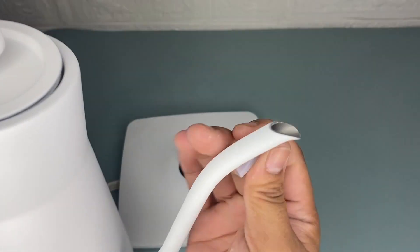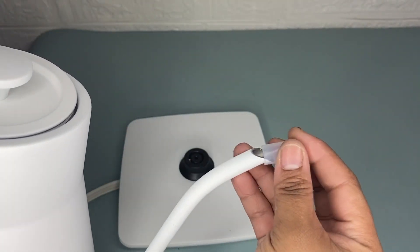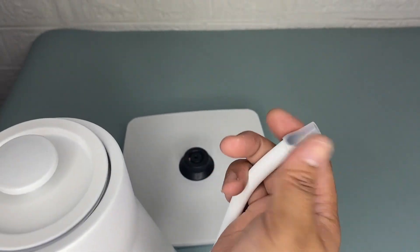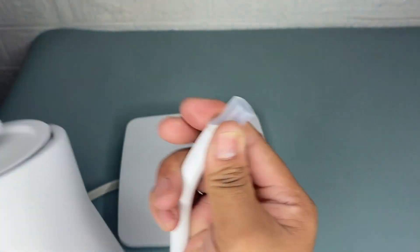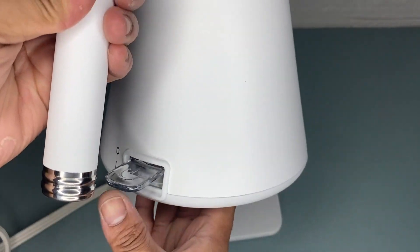As you can see, this Gooseneck has a dry boil protection and an auto-off function, so you can effectively protect the water heater kettle from being damaged by pressing the button by mistake.